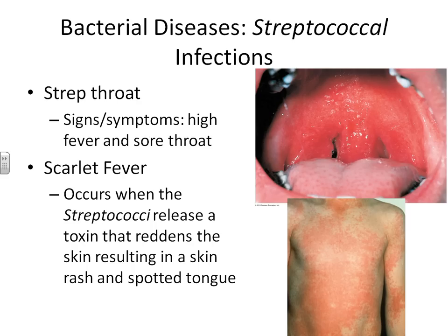Pyogenes comes from the word pyro for fire, due to the extremely high fevers typically seen with strep throat. Scarlet fever is a very similar infection to strep throat, but the streptococci that causes scarlet fever also releases a toxin as your phagocytic cells destroy the bacteria. This toxin moves to the outer layers of the skin and the oral cavity and tongue, leading to an extremely red rash visible on the skin and inside the mouth.